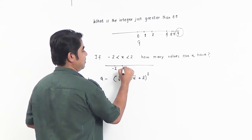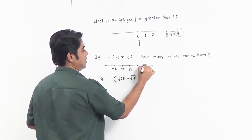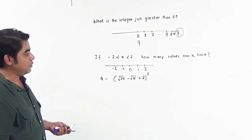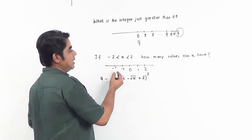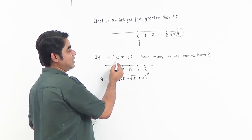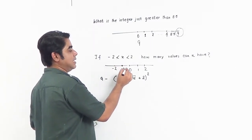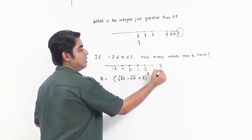Now on the number line: minus 2, minus 1, 0, 1, 2. Some of you might be thinking that since x is less than 2 and greater than minus 2, in between there are 3 values. But this answer is wrong.